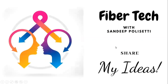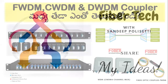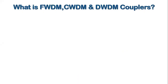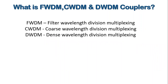Hi friends, welcome to my channel FiberTech with Sandeepolus80. Today we are covering FWDM, CWDM, and DWDM couplers — basically what they are. FWDM is Filter Wavelength Division Multiplexing, CWDM is Coarse Wavelength Division Multiplexing, and DWDM is Dense Wavelength Division Multiplexing.